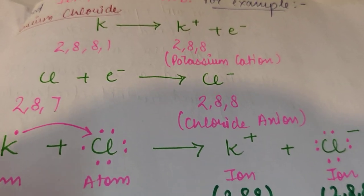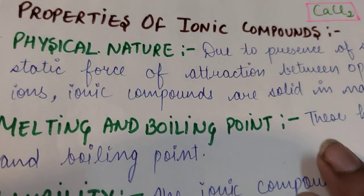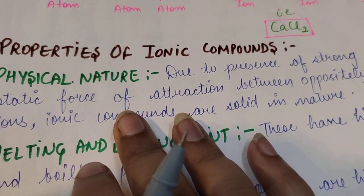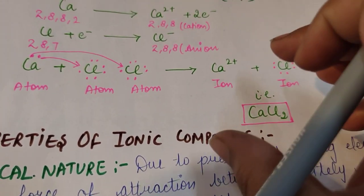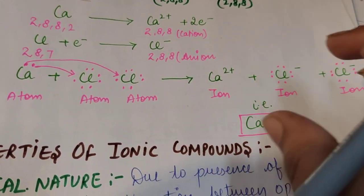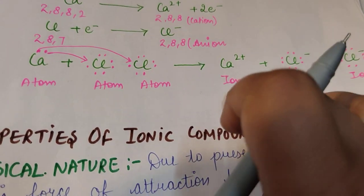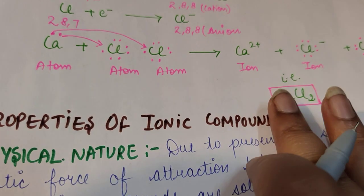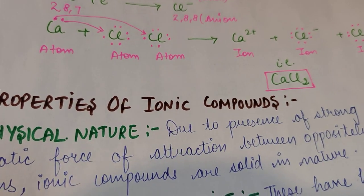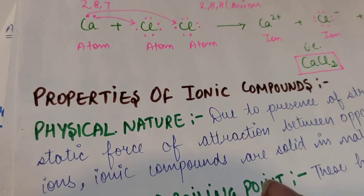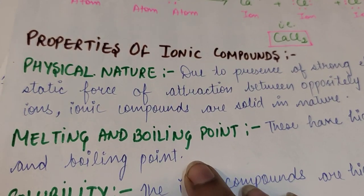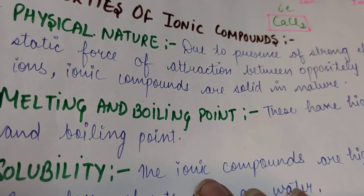An ionic compound is formed in this way. Now, properties of ionic compounds: the first is physical nature. Between the cation and anion there exists a strong electrostatic force of attraction. Due to this strong electrostatic force of attraction, ionic compounds are solid in nature and they have high melting and boiling points.